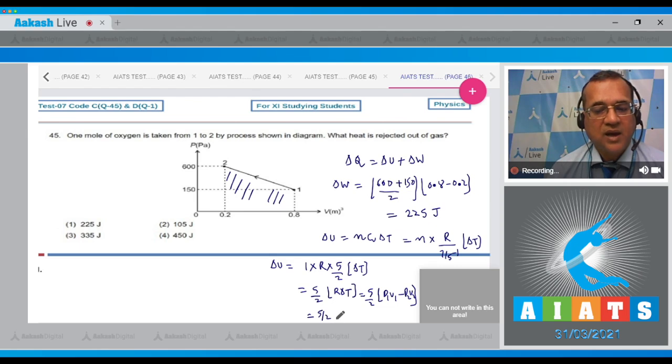Now fill here: 5/2 and P₁V₁—P₁ is 600 and V₁ is 0.2, so 600 into 0.2 minus P₂ is 150 into 0.8. These two values are equal, so this comes to be 0.